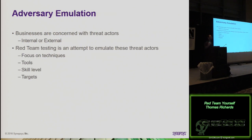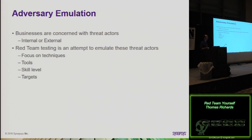With adversaries, businesses should be concerned with threat actors — both internal and external. Different threat actors will present themselves for different businesses. Certain organizations are more concerned about nation-states, others about criminal enterprises. Just look at WannaCry and the rise of ransomware — locker bots encrypting everything and forcing payment. We had clients come to us wanting to test how they'd respond to a ransomware attack. When you do a red team, you want to emulate these threats: what would drive someone to conduct these attacks, what resources would they have, their techniques, tools, skill set, and targets?